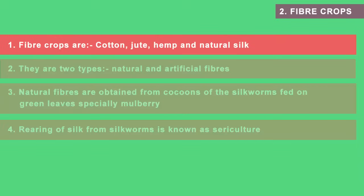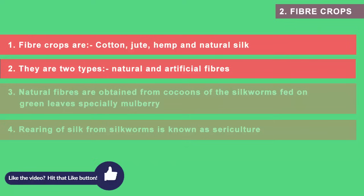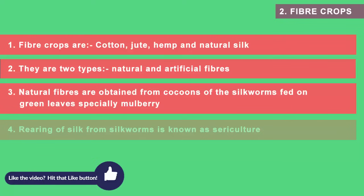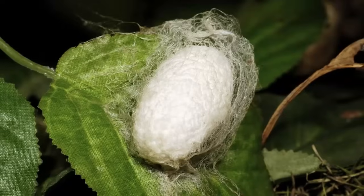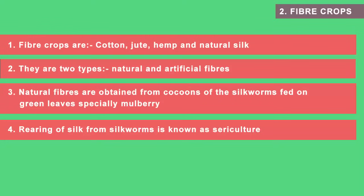The next category is fiber crops: cotton, jute, hemp and natural silk. These crops have traditionally been used to make paper, cloth or rope, and they are of two types — natural and artificial. Today fibers are being chemically modified to make them stronger. Most natural fiber crops are obtained from cocoons of silkworms, which feed on green leaves known as mulberry. The process of rearing silk from silkworm is known as sericulture — remember, 'S' stands for both sericulture and silk.